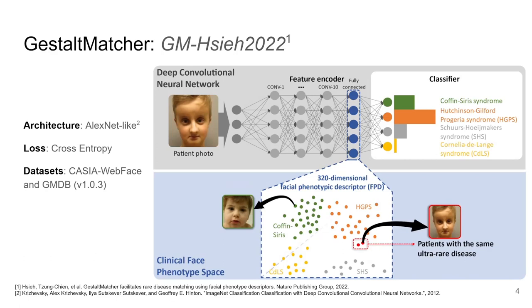They did, however, already use the penultimate layer of their network to allow unseen disorders to be clustered. They did so by encoding a gallery set and later using cosine similarity to match undiagnosed patients to diagnosed ones within the feature space.